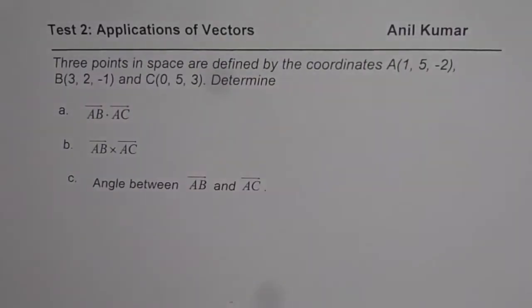Question number one here is, we are given three points and we need to find the dot products and the angle between them. Let us look into this question in further details. So the question here is, three points in space are defined by the coordinates A(1, 5, -2), B is (3, 2, -1), and C is (0, 5, 3). Determine dot product of AB and AC, cross product of AB and AC, and angle between AB and AC.